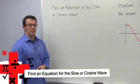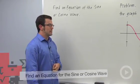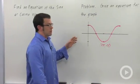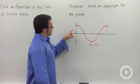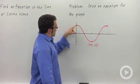I want to find an equation of a sine or cosine wave. I've got an example. Here I'm given a graph and I have to come up with the equation. It says give an equation of the graph that I have here.